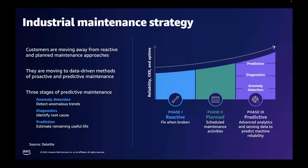Let's talk about what constitutes a good maintenance strategy. We see many customers moving away from reactive and planned maintenance approaches to more data-driven methods of proactive and predictive maintenance. The whole idea is to increase reliability and overall equipment effectiveness. The first phase is being reactive and fixing things when they're broken — there are scenarios where some equipment should be run until failure and then replaced. The second phase is to plan for reliability and have scheduled maintenance activities; however, these events tend to stop productivity sometimes when there's no indication of any kind of failure.